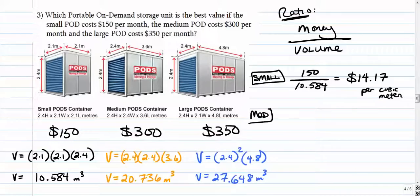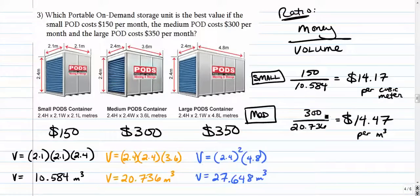The medium one, cost over volume is 300 over 20.736. So if we go 300 over 20.736, we get $14.47 per cubic meter. So out of these two, the smaller or the medium, I would rather pay $14.17 for every cubic meter than $14.47. It's not much of a difference, but I would rather pay this amount right here.